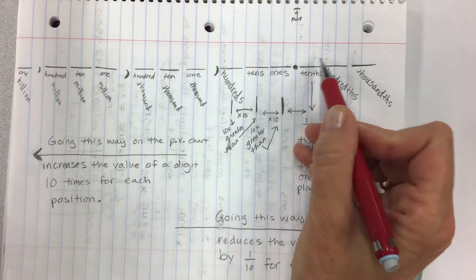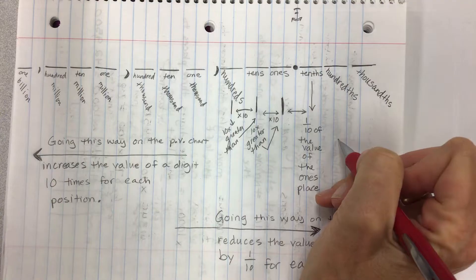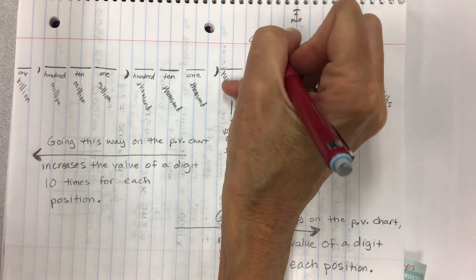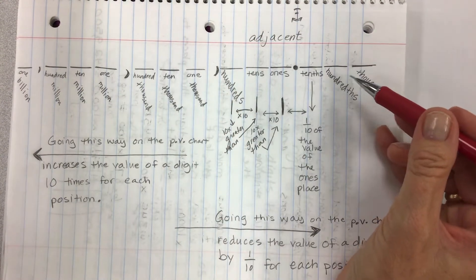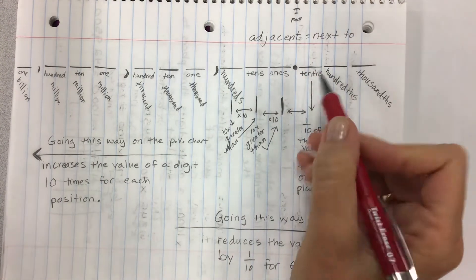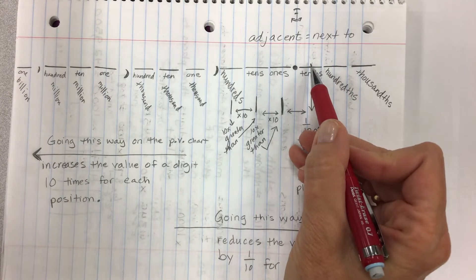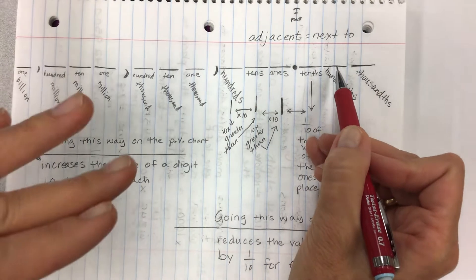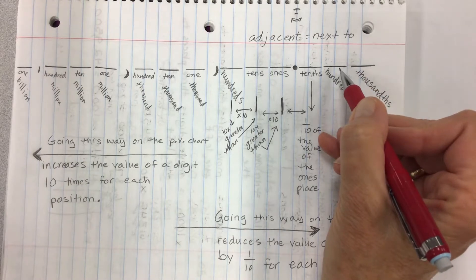Now, what about if I'm comparing from here to here? Each position is one-tenth of the one next to it. A vocabulary word we often talk about is adjacent. You'll see that a lot in fifth grade. Adjacent means next to. And so if a digit is next to another place value position, the digit on the left is ten times greater than the one on the right. Conversely, or like on the flip side, the digit on the right is one-tenth the value of the digit on the left.